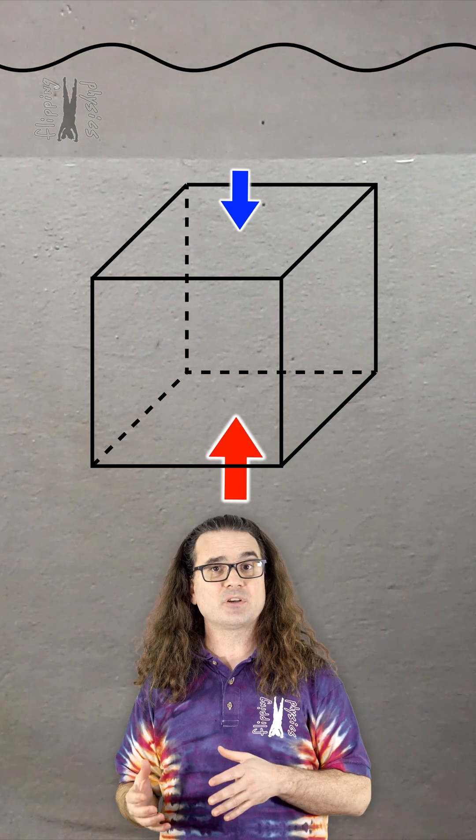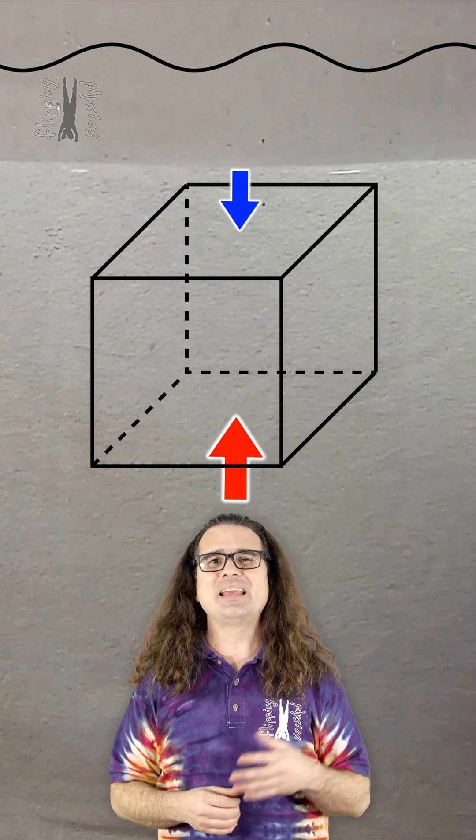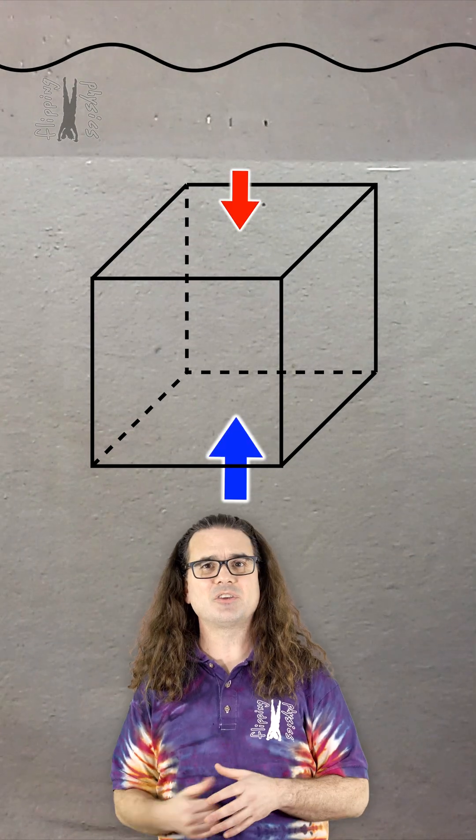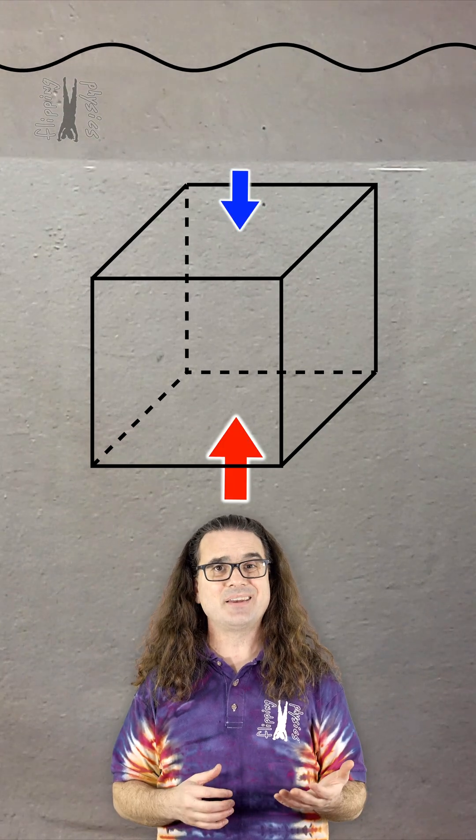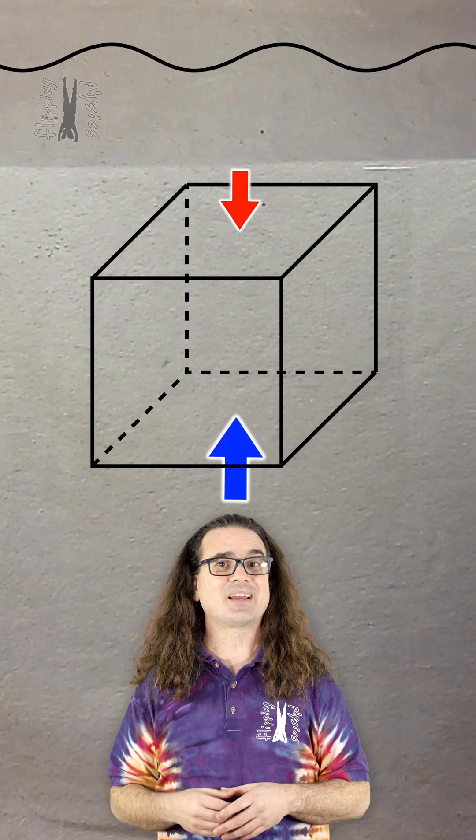That leaves us with an upward force acting on the bottom side of the cube and a downward force acting on the top side of the cube. And again, because pressure increases with depth, the upward force acting on the bottom side is larger than the downward force acting on the top side.